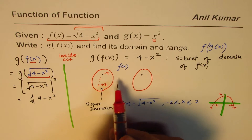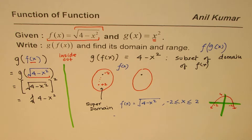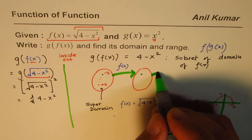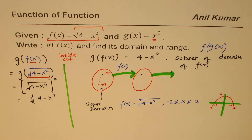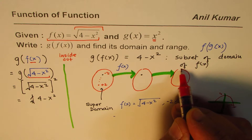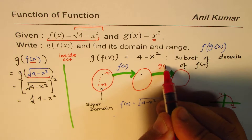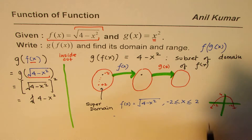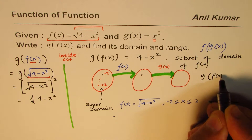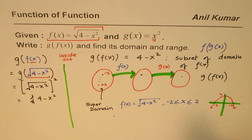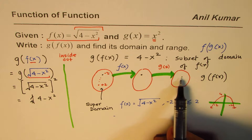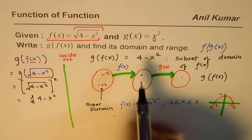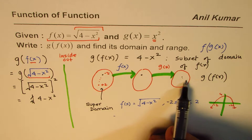Now from this domain we get outputs. From this domain we get f of x, and using these values we get our final function — that is when we apply g of x on f of x. So we get g of f of x. So that really gives you the range. Domain is decided from here itself — that is our super domain. So we see that the output function 4 minus x square has no restriction on domain by itself, so we go with the super domain.